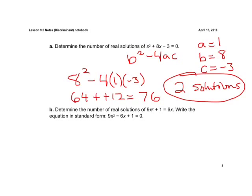Determine the number of real solutions for b. Now, in part b, they give it to us like this. We need to first write it in standard form, which they did for us. Okay, and that tells us our a is 9, our b is negative 6, and our c is 1.